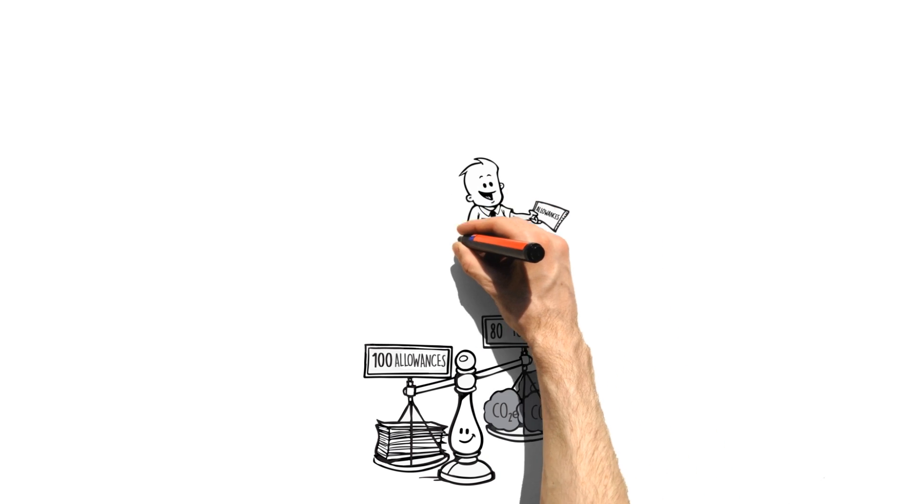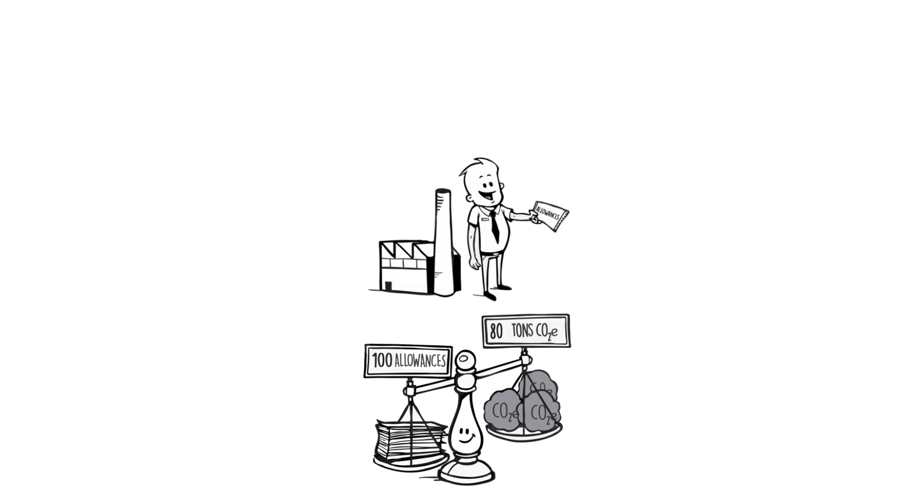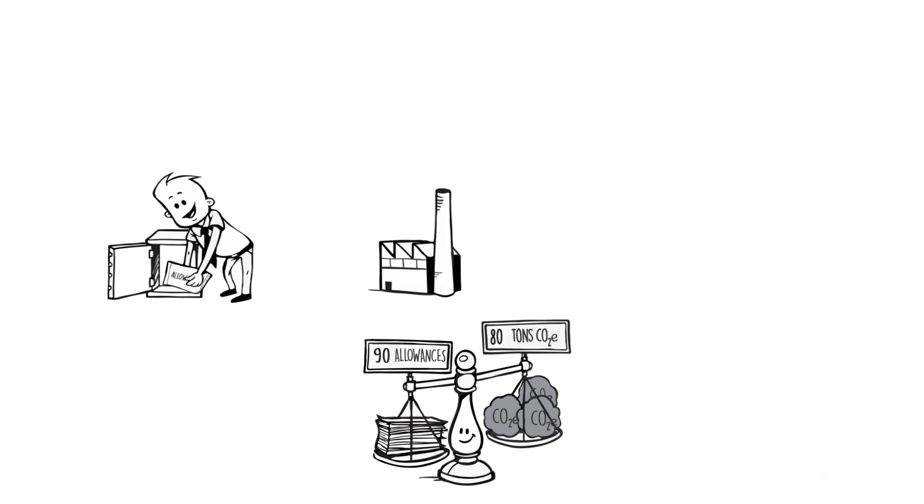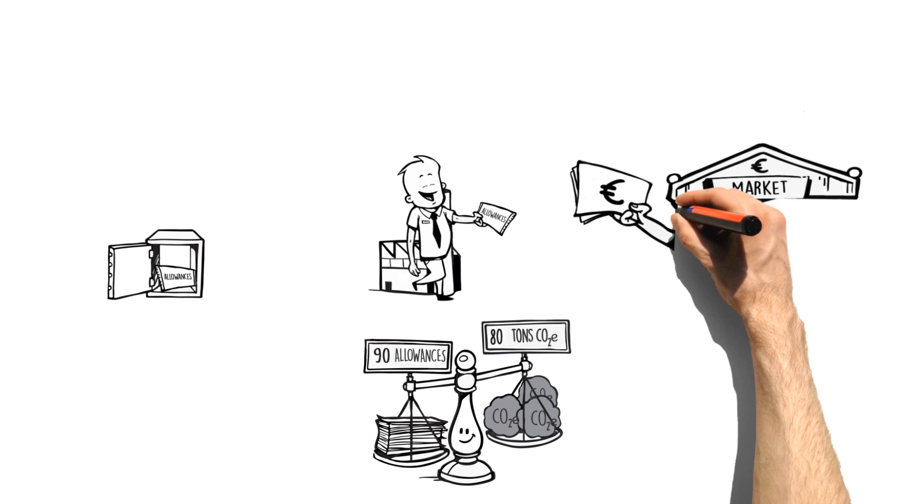Conversely, if Company B only emits 80 tonnes of CO2 equivalent, it can bank the excess 20 tonnes for use in future years or sell them to other companies.